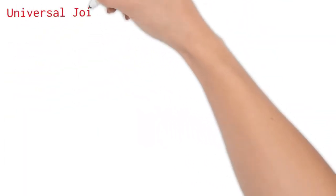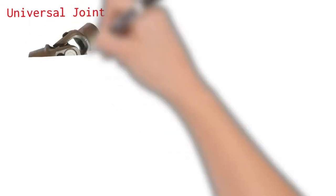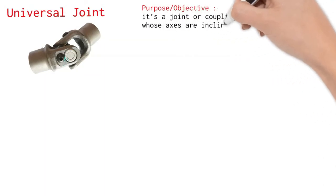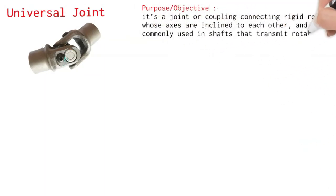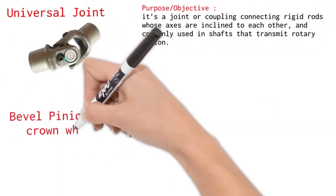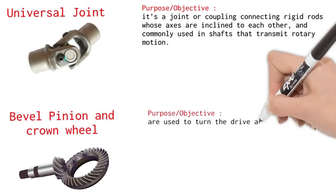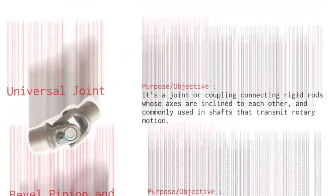Universal joint. It's a joint or coupling connecting rigid rods whose axes are inclined to each other and commonly used in shafts that transmit rotary motion. Bevel, pinion and crown wheel. These are used to turn the drive around the 90 degrees. Also provide permanent reduction in speed received from the engine.